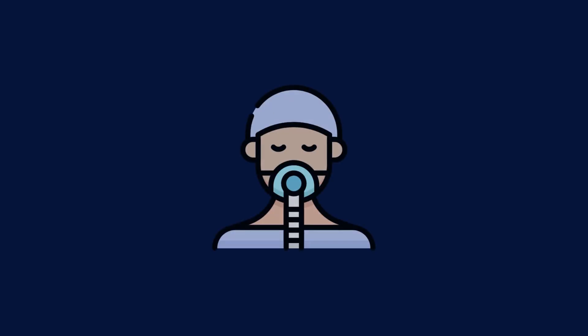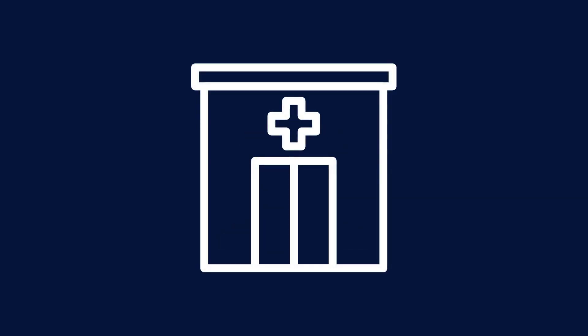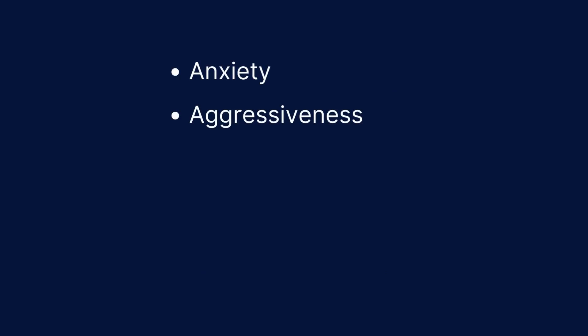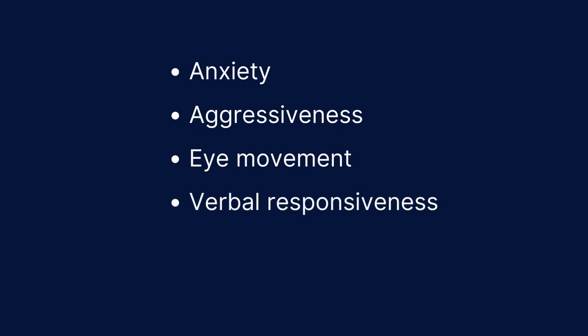The scale assesses patients in terms of how agitated or sedated they are while undergoing treatment in an emergency room or intensive care unit. It takes into account factors such as the patient being anxious, how aggressive they are, and whether they fight off healthcare professionals trying to put ventilators on them, if there is eye movement during treatment, their verbal responsiveness, as well as their motor responsiveness.